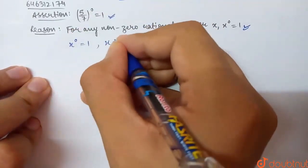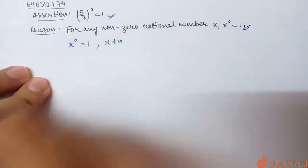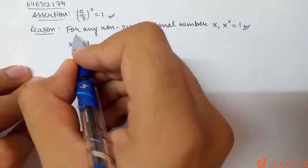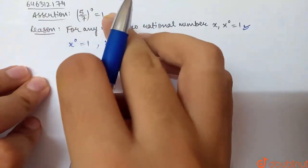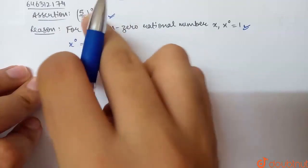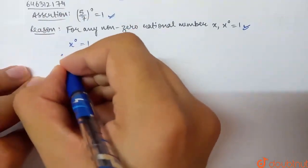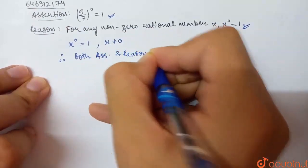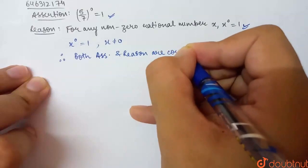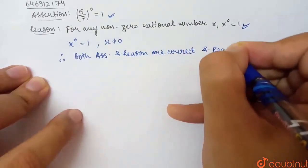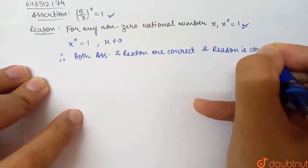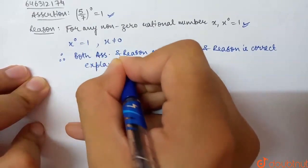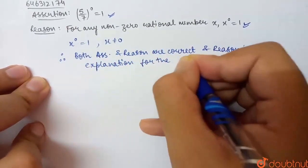Therefore, x to the power 0, where x not equal to 0, x power 0 is equal to 1. Hence, here we have assertion and reason both correct. The reason is the correct reasoning for the assertion. Therefore, both my assertion and reason are correct, and reason is the correct explanation for the assertion.